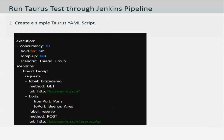You will also be able to run the Taurus test through a Jenkins pipeline. This is a sample of what the Taurus YAML script will look like. As you can see, the script runs 10 concurrent users, has a hold time for 5 minutes, a ramp up of 60 seconds, and the thread group is running two requests — one is a GET request to blazedemo.com and the other is a POST request to blazedemo.com/reserve.php.